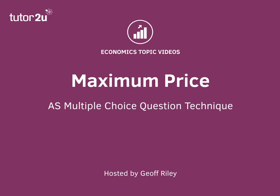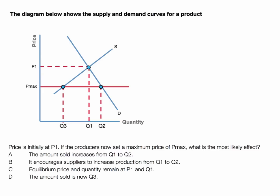Hi there. Let's take a look at an AS Micro multiple choice question looking at the effect of a maximum price on the market. Here's the question: the diagram below shows the supply and demand curves for a product. The initial price is P1 — that's the equilibrium price, the market clearing price. A maximum price is now imposed of Pmax that lies below P1, and we're asked what is the most likely effect on the market.